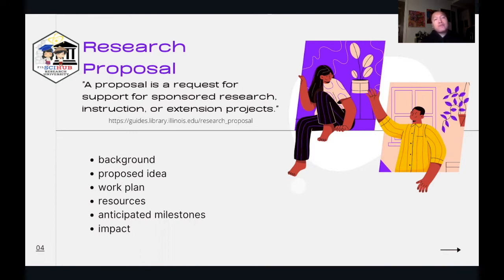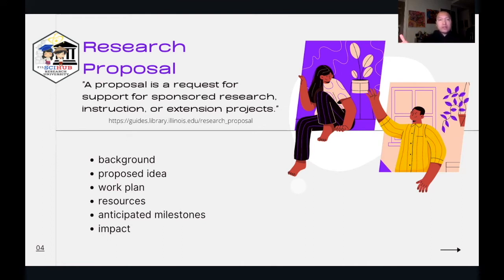A research proposal is a request for support for sponsored research, instruction, or extension projects. A request has to be quite convincing. A research proposal should provide a background of the proposed work — what information convinced you to work on this area, and what's the conventional wisdom within the proposed area of study? A research proposal also puts into detail the proposed idea: from a very broad research topic, what specific scope are you trying to cover, and what are the specific research questions you're trying to answer? A well-written research proposal should have a fairly well-defined scope.